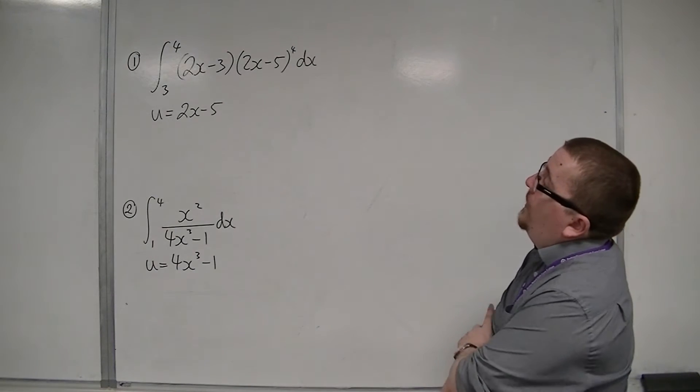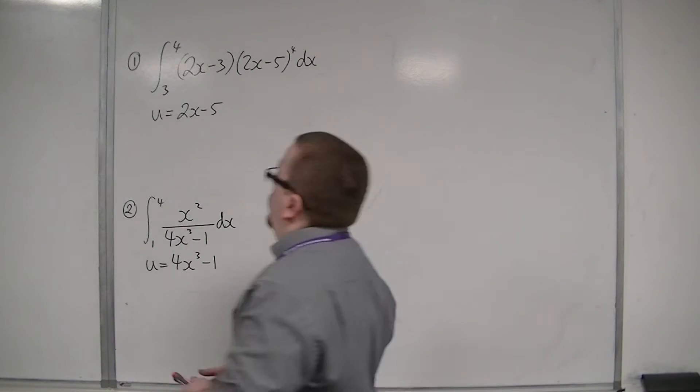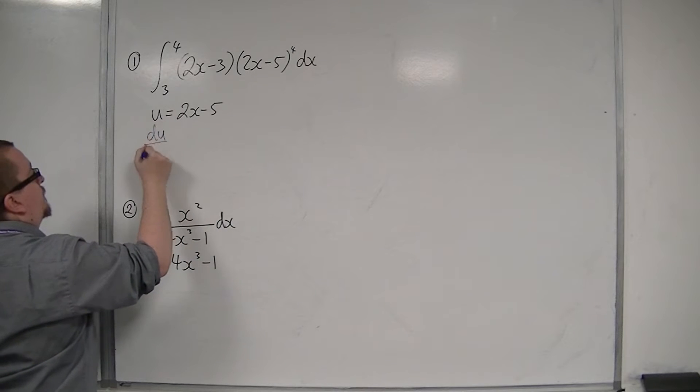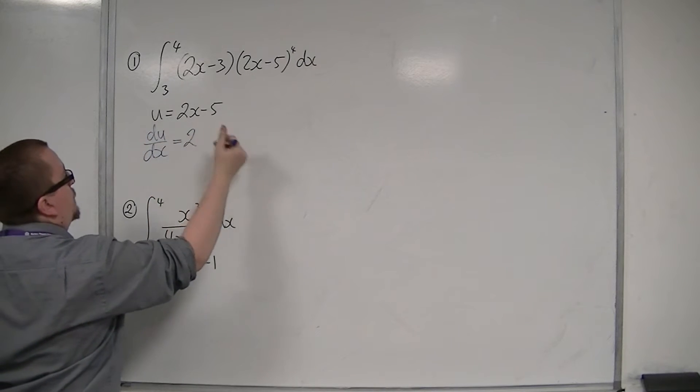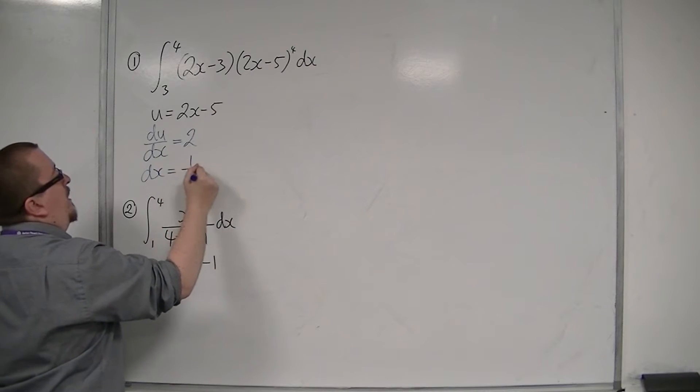The integral of 2x minus 3 times 2x minus 5 to the power 4 dx between 3 and 4. So the first thing to do is to find du by dx. So that's going to be 2. And so dx is going to be 1 half du.